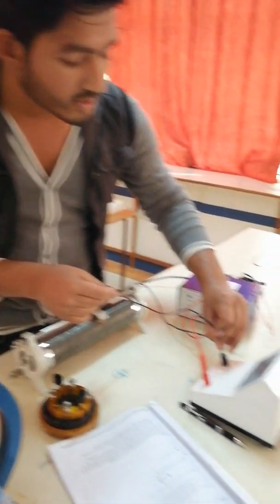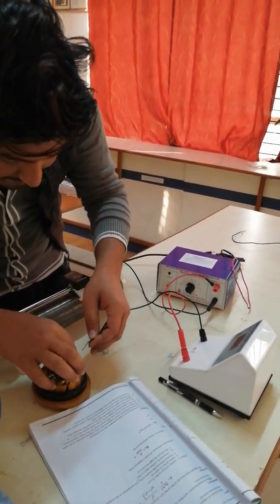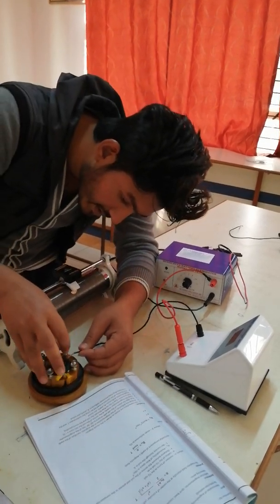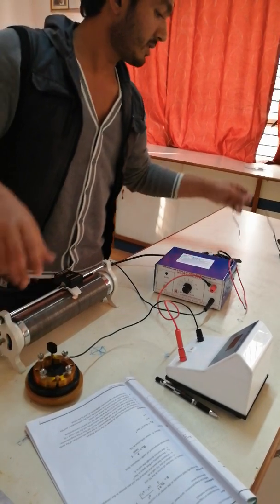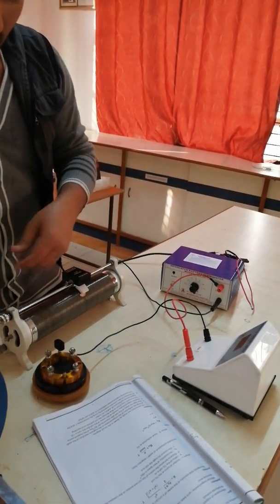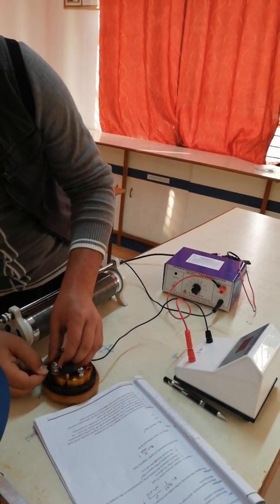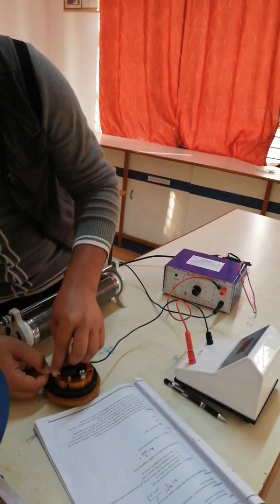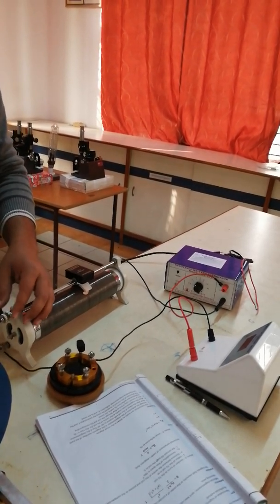This will go from the ammeter to one terminal of the commutator and to the final unit. One wire from the commutator to the resistor, to the upper end.